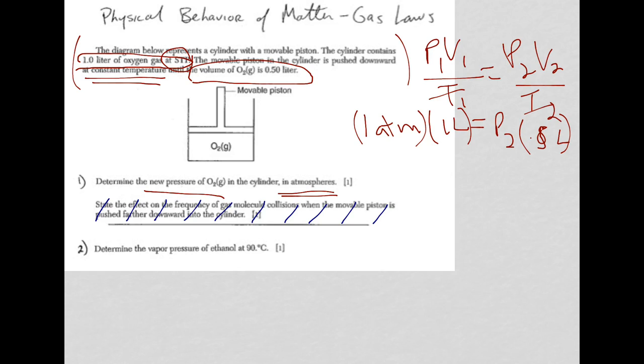If you think the answer is 0.5 atm, you're wrong. 1 times 1 is 1, 1 is equal to P2, times 0.5. I've got to divide both sides by 0.5, and 1 divided by 0.5 is 2 atmospheres.